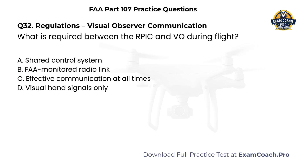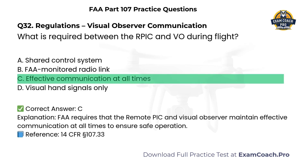Regulations — Visual Observer Communication. What is required between the remote PIC and Visual Observer during flight? A. Shared control system. B. FAA-monitored radio link. C. Effective communication at all times. D. Visual hand signals only. Correct answer: C. Effective communication at all times. The FAA requires that the remote PIC and Visual Observer maintain effective communication to ensure safe operation.